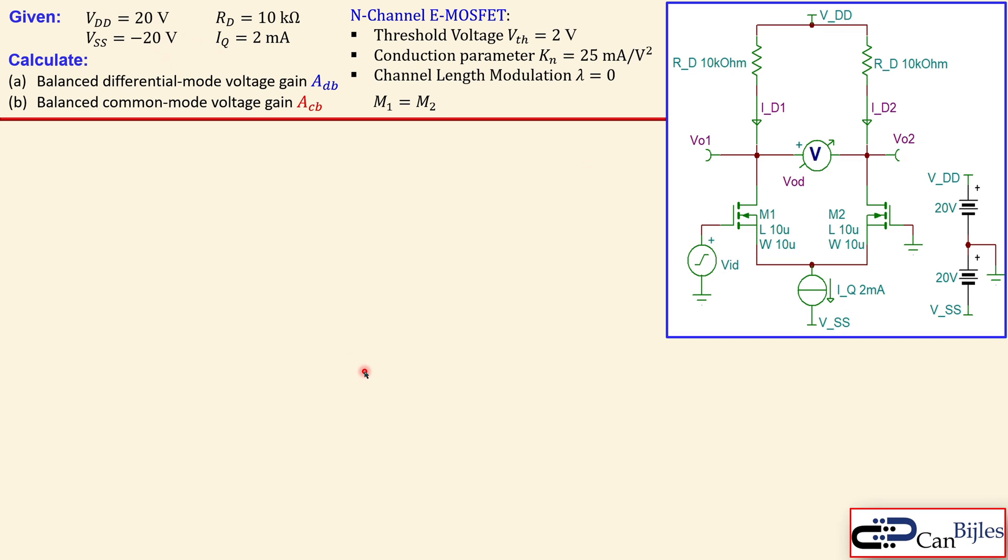What we'd like to know is the balanced differential mode voltage gain for this situation, and the balanced common mode voltage gain for this situation. Again, the M1 and M2 are matched.